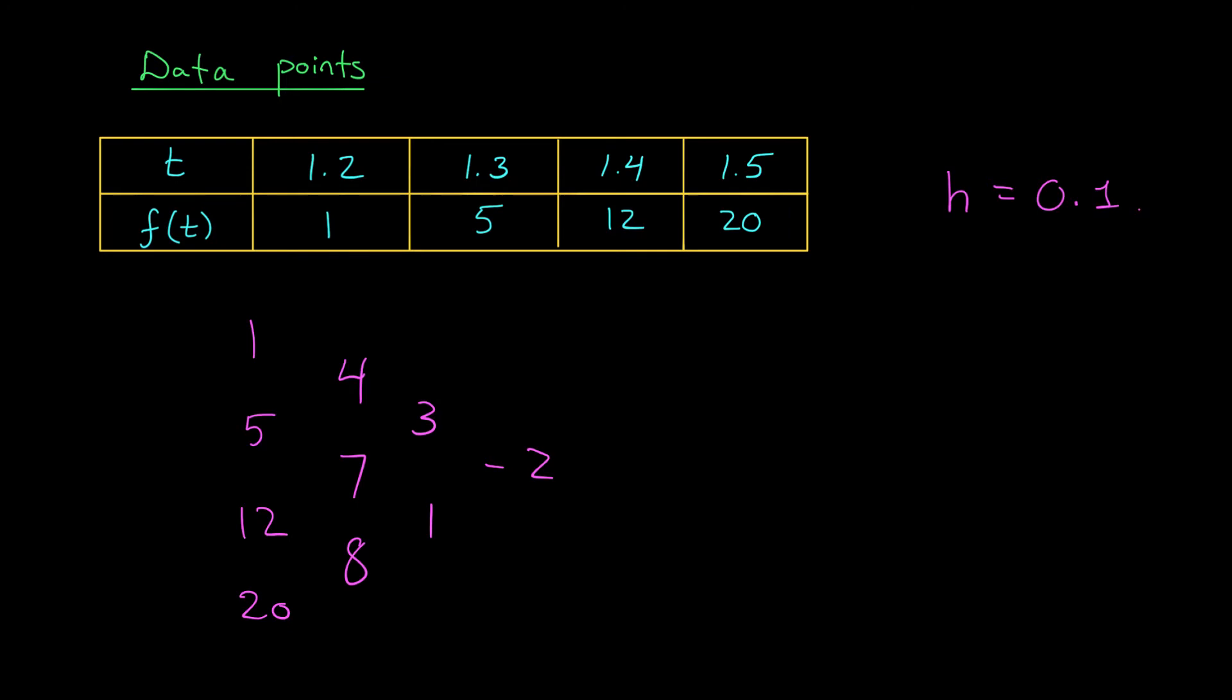Just like before, I read off my forward differences using the top line of this triangle. My y-naught value is 1, my delta y-naught is 4, my delta squared y-naught is 3, and my delta cubed y-naught is minus 2. We now have everything we need to write down our interpolating polynomial. Let's check it out.